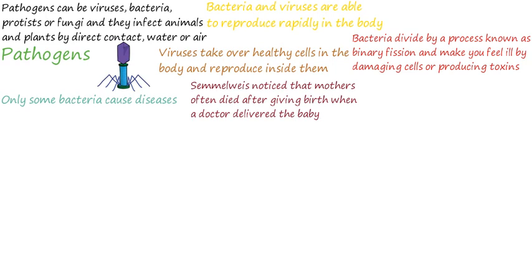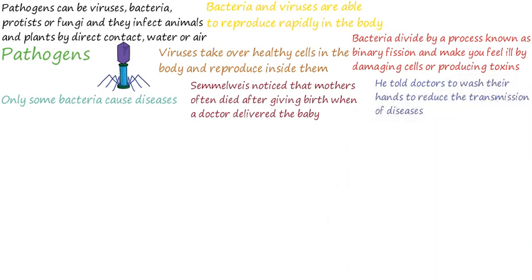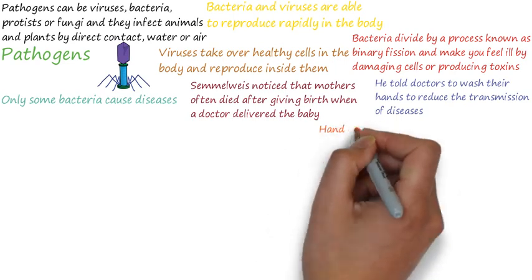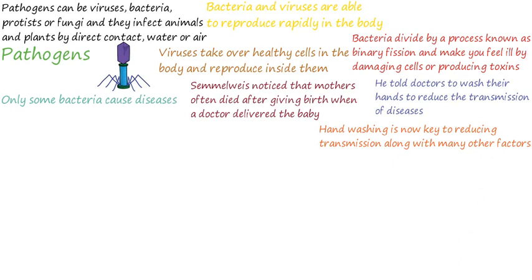The spread of these diseases can be reduced or even prevented. Semmelweis, back in the 19th century, made a very common observation and suggested a simple but effective solution. He noticed that mothers often died after giving birth when a doctor delivered the baby. He suggested this was due to doctors dealing with other situations first and then not washing their hands before delivering babies, and told doctors to wash their hands to reduce the transmission of diseases.